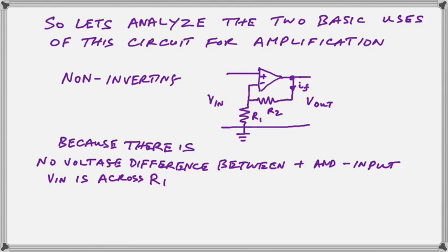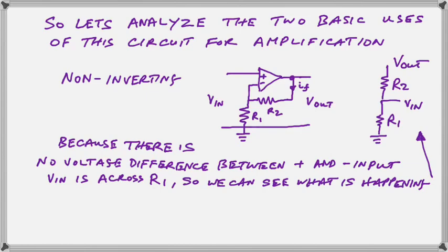You may have to rewind the video and let that sink in. Because there is no difference between the plus and minus input as far as voltage is concerned, the VIN, which as you can clearly see is applied to the plus input, is also across the minus input. Therefore, it is going to be applied to R1. And since the other end of R1 is connected to that ground symbol or zero voltage, it means that the voltage across R1 is the voltage VIN.